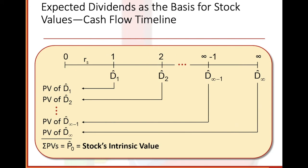Expected dividends as the basis for stock valuation. Here's a cash flow timeline starting at zero, going to year one, two, all the way to infinity. That represents the stock's intrinsic value. We take the present value of D-sub-one, present value of D-sub-two, all the way to present value of D to infinity. The sum of all those present values equals P-sub-zero, which is the stock's intrinsic value.